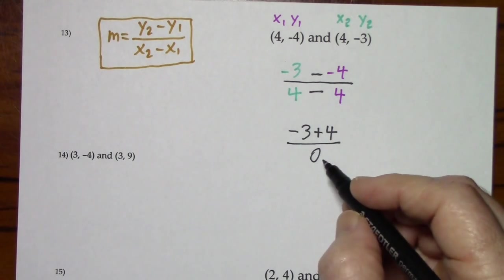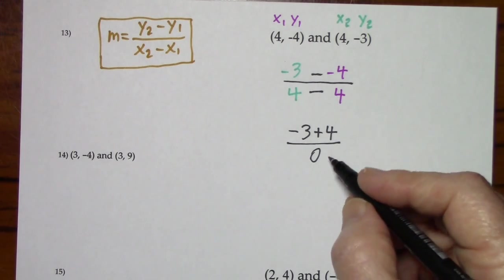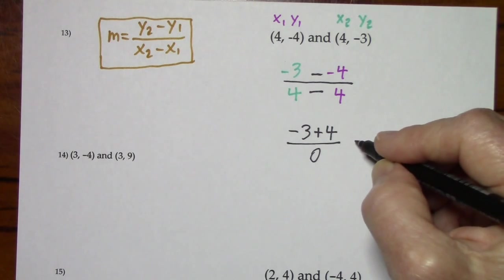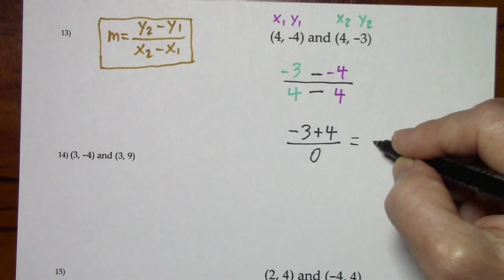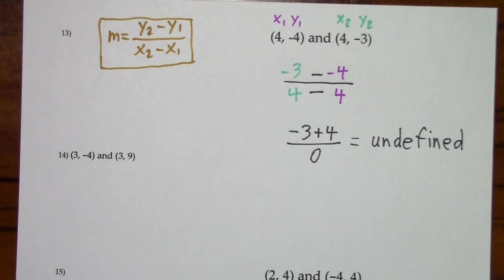0 in the denominator is not allowed in mathematics. We don't know what the value of this is. So we say the slope is undefined. Sometimes they'll say there's no slope. I'm going to say it's undefined.